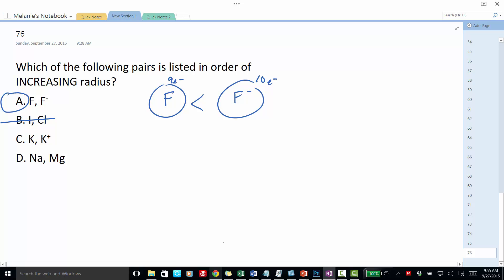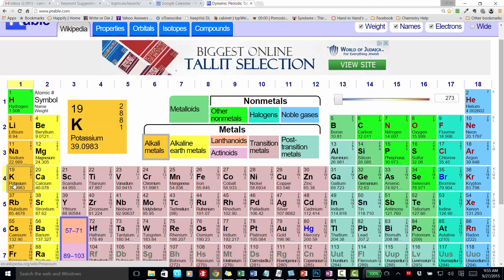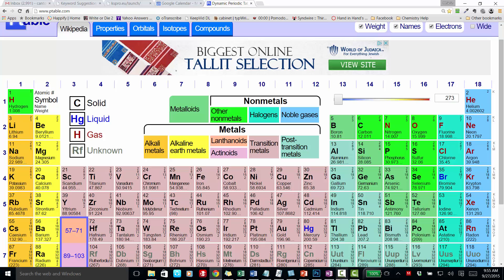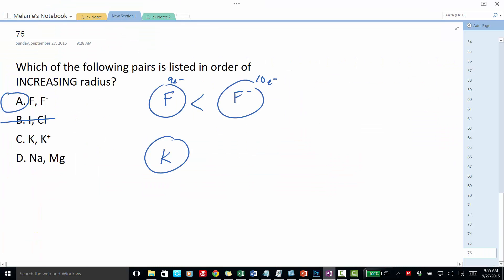How about potassium and the potassium plus ion? Potassium here has 19 protons. Potassium has 19 protons and 19 electrons, and potassium plus means it loses an electron, so it only has 18 electrons. So potassium plus, the potassium ion, has one fewer electron. Potassium is going to be larger than potassium ion, so this one is not going to work.